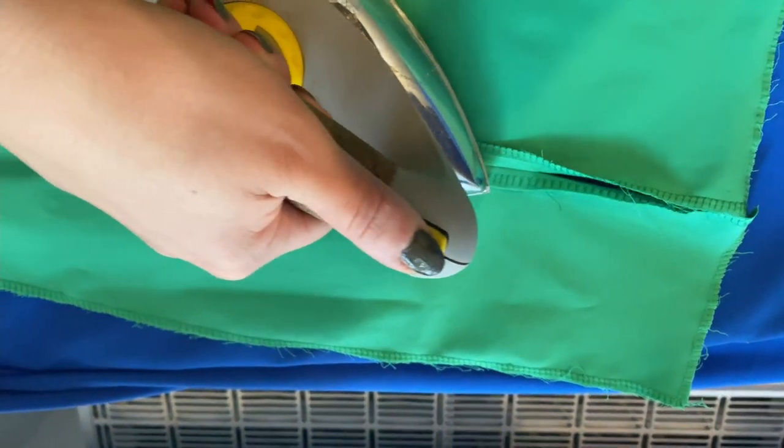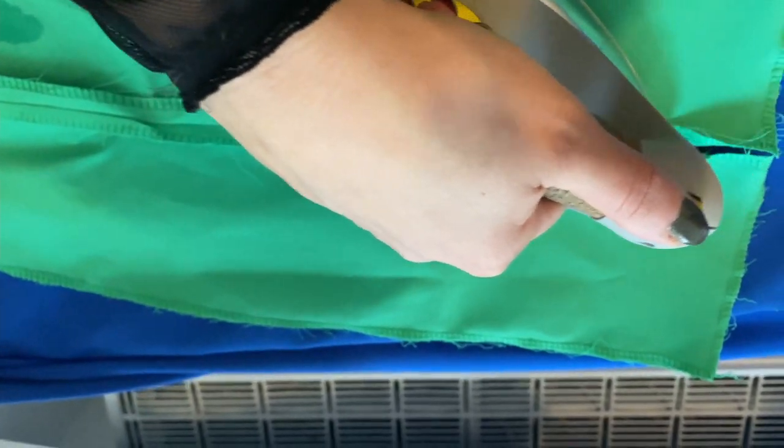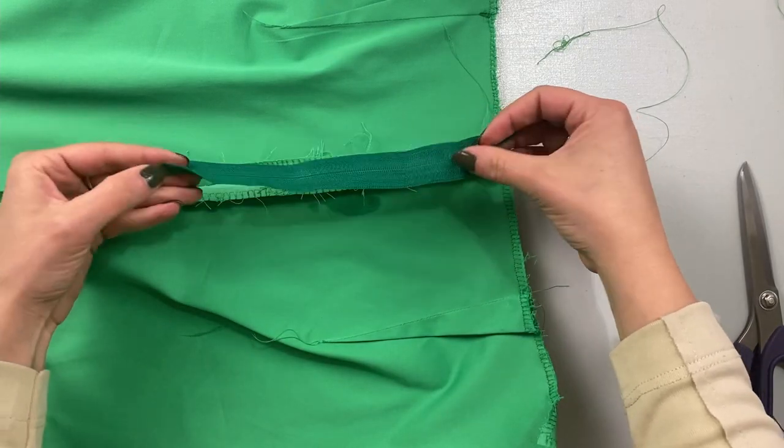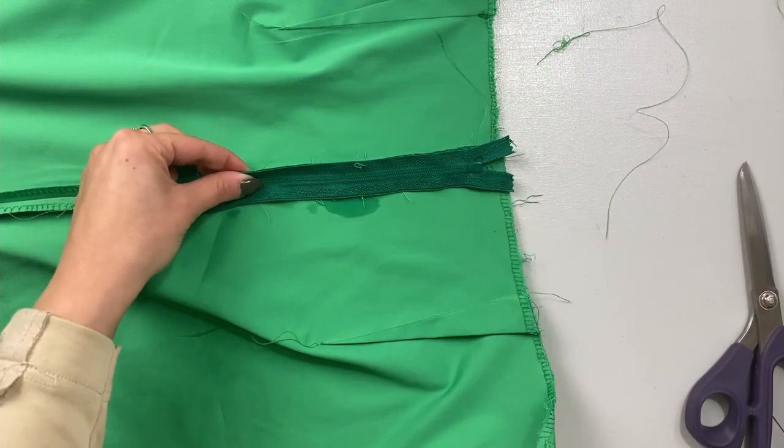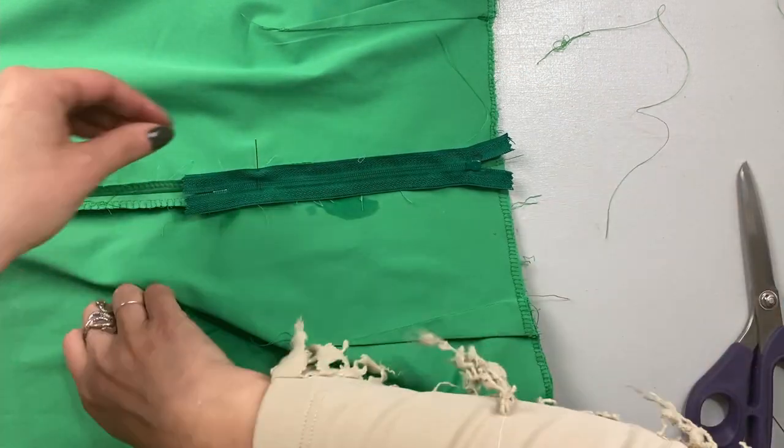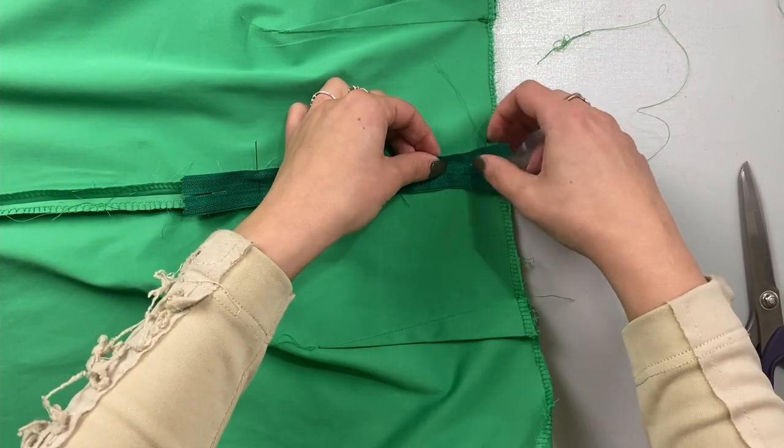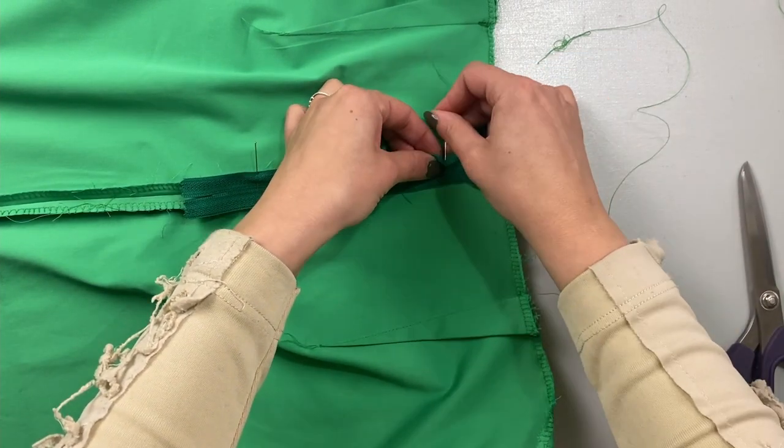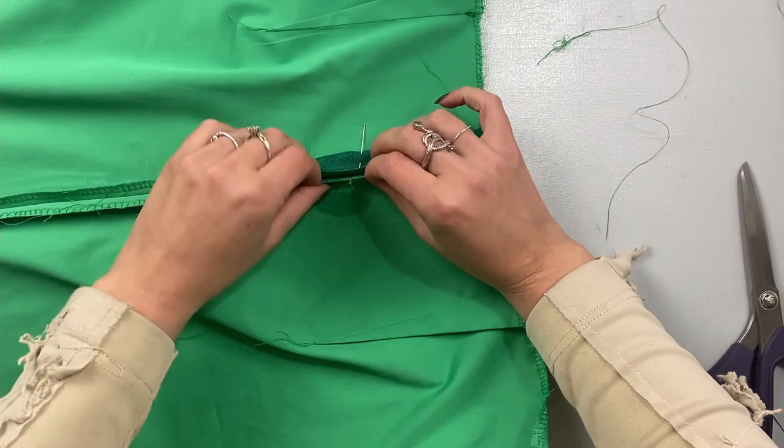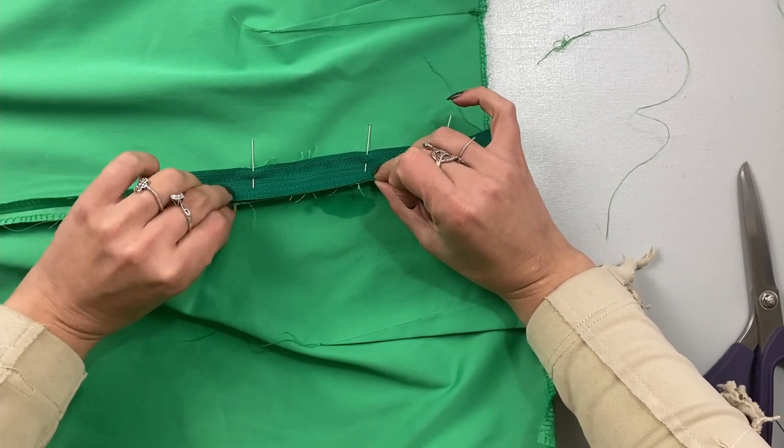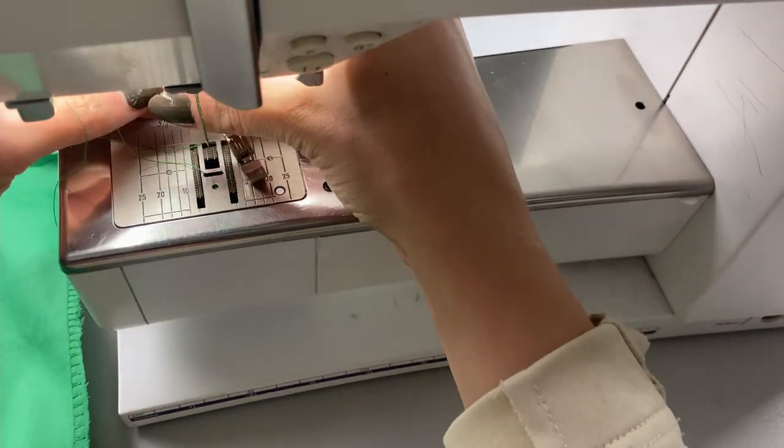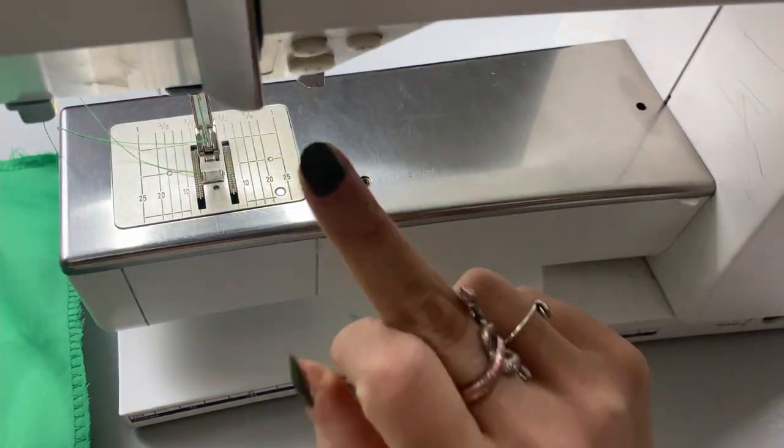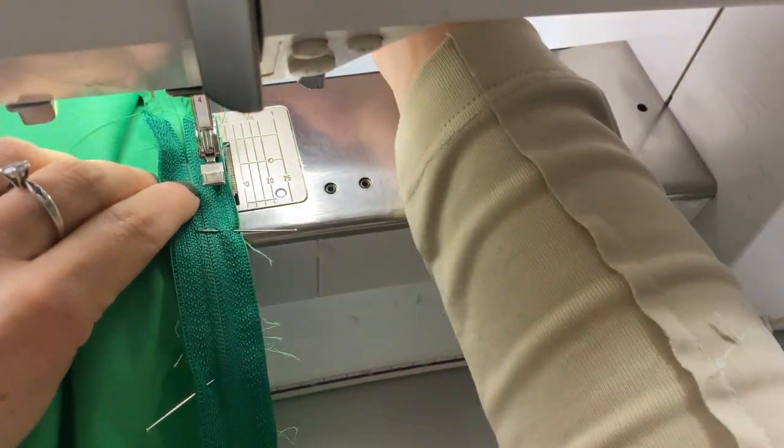Next I press that seam allowance apart with the iron. It's time to attach the zipper. For that I lay it on top of the ironed seam allowance, the zipper bolt facing towards the fabric. I attach each side of the zipper to one of the seam allowance sides with pins. Before I sew the zipper on I need to change the sewing foot to one that's meant to sew in zippers.